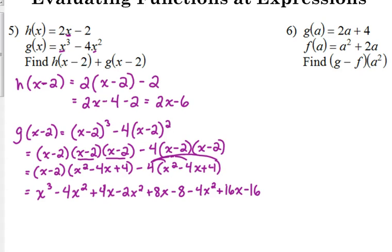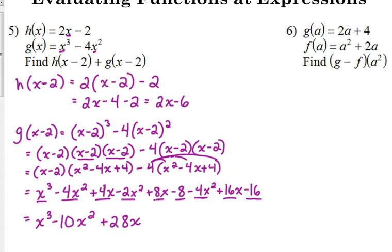We're in the home stretch — we've got to combine like terms. X cubed: I don't see any more of those, so we've just got X cubed. X squared: negative 4X squared and negative 2X squared gives negative 6X squared, and another negative 4X squared, so that's negative 10X squared. 4 plus 8 is 12, plus 16 is 28X. Constants: negative 8 and negative 16 is negative 24. So that was a little intense, but manageable — break it down a piece at a time.